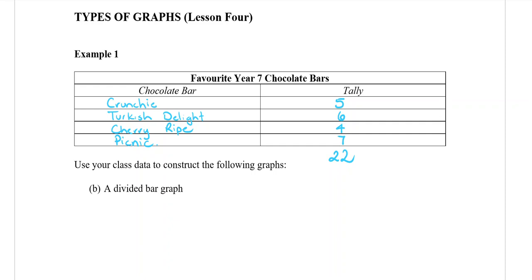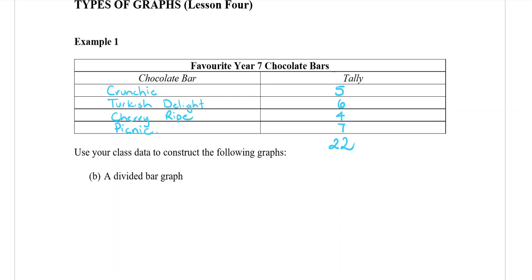Now it's very important that we have our total. There's 22 people that we surveyed for the chocolate bars. So out of 22 people we're going to work out how long this is in the theory booklet.